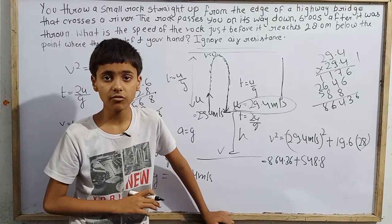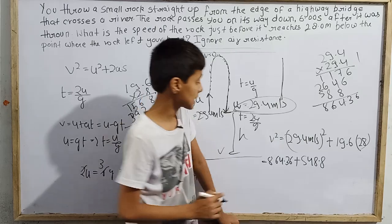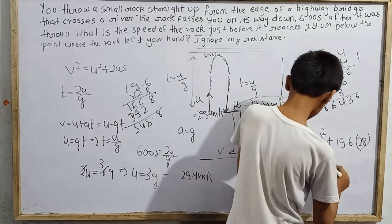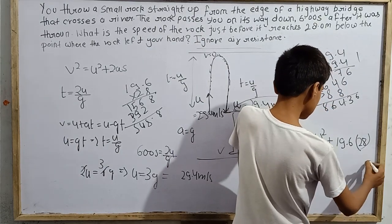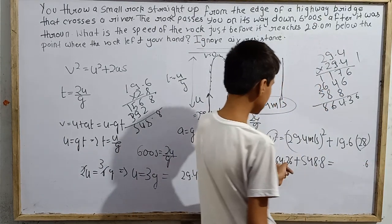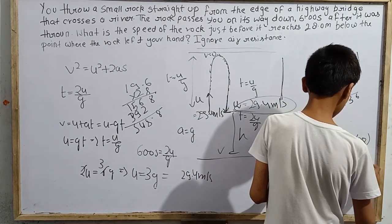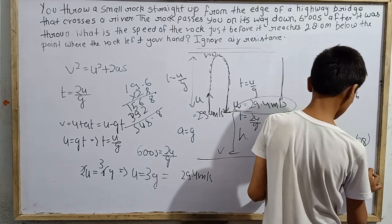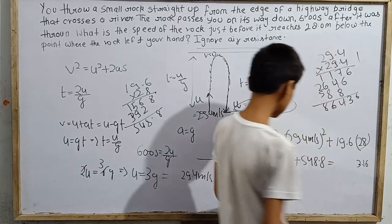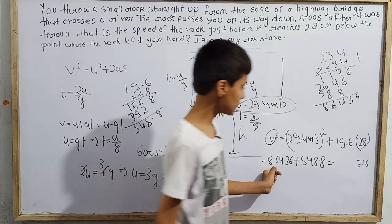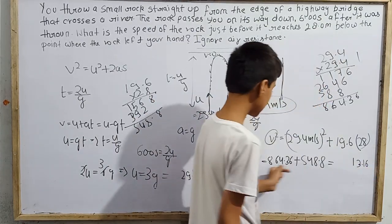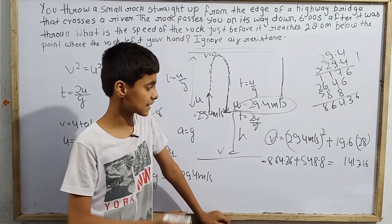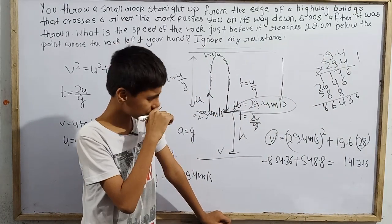The unit is meters squared per second squared, since we have taken velocity squared. So why is it meters squared per second squared instead of meters per second? Because we're calculating velocity squared here. Now adding 864.36 and 548.8. Working through the addition step by step: 8 plus 8 is 16, carry 1. Continuing gives us 1413.16.